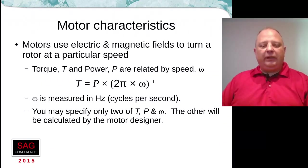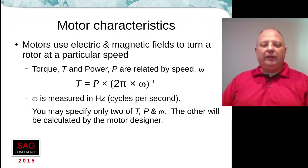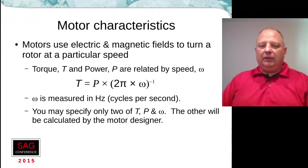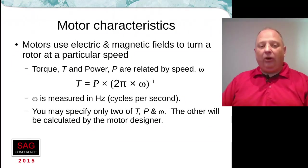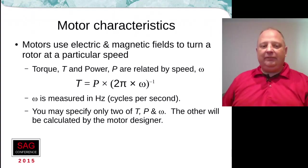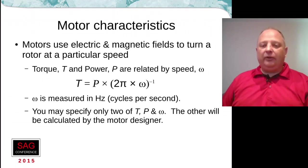We need to start with a motor characteristic that a lot of process engineers will not have encountered. When dealing with alternating current motors, you have something called torque and something called power. These two quantities are related, and you can't necessarily specify torque, power, and speed all at the same time. The torque is calculated from the power and the speed, or the power is calculated from the torque and the speed you specify. You can only specify two of the three — the third is then computed.